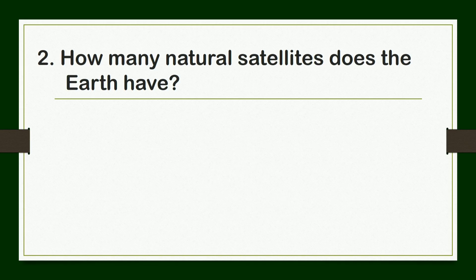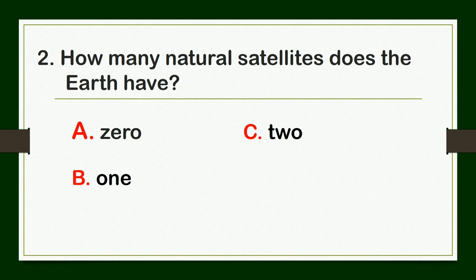Next question: How many natural satellites does the Earth have? A. Zero, B. One, C. Two, or D. Three.